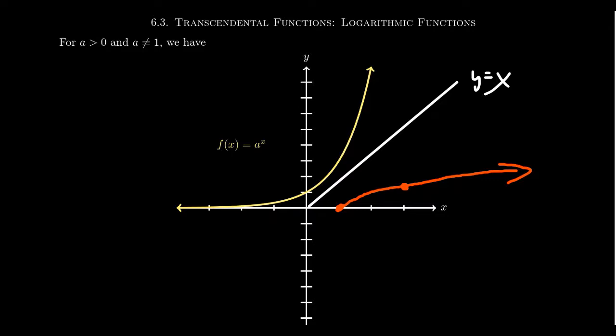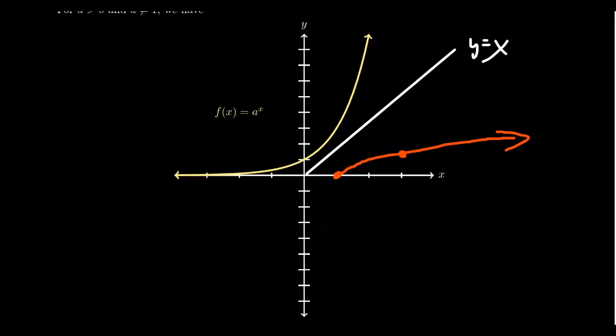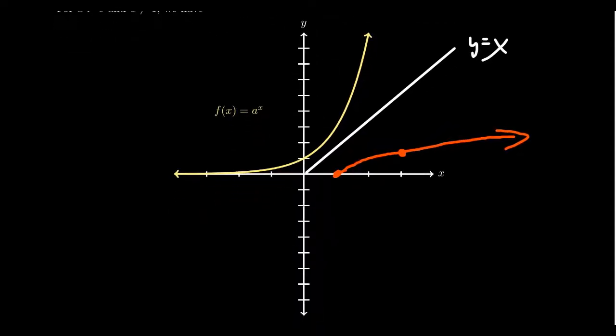I should also mention that the regular exponential, it doesn't have to be natural exponential, has a horizontal asymptote at the x-axis. As a consequence, the logarithm will have a vertical asymptote at the y-axis. This gives you an idea of what's going on here. If f of x equals a to the x, then we see that f inverse of x will look like log base a of x.